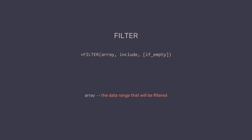Let's break down the filter function structure. Here is the syntax. First, array — this is the data range that will be filtered. Second, include — this is where you set the condition, telling exactly what to look for to filter the data. Finally, if empty — this is optional — the message or value to display if no match is found.